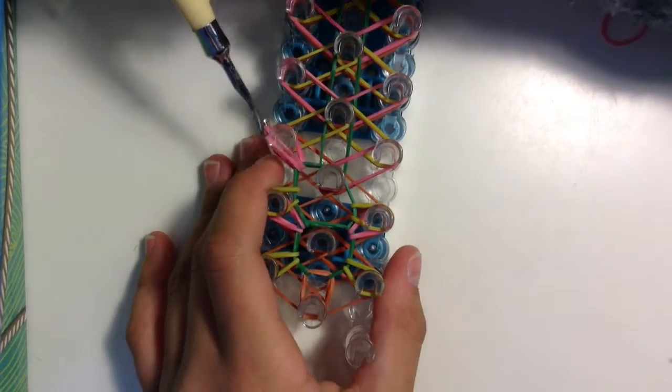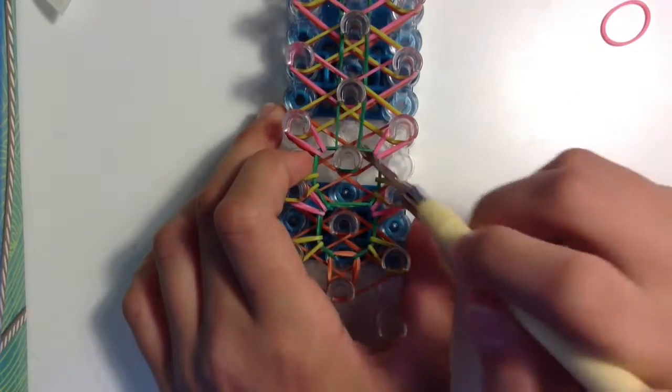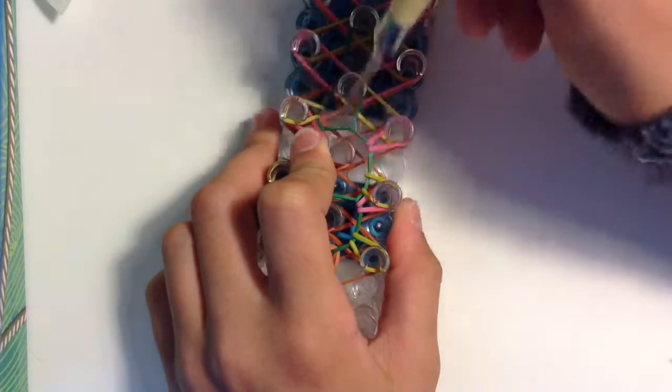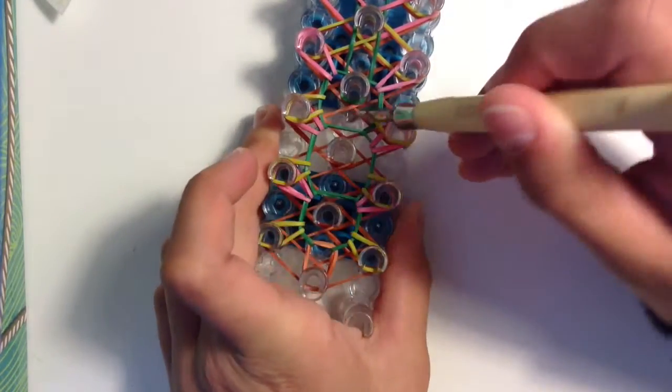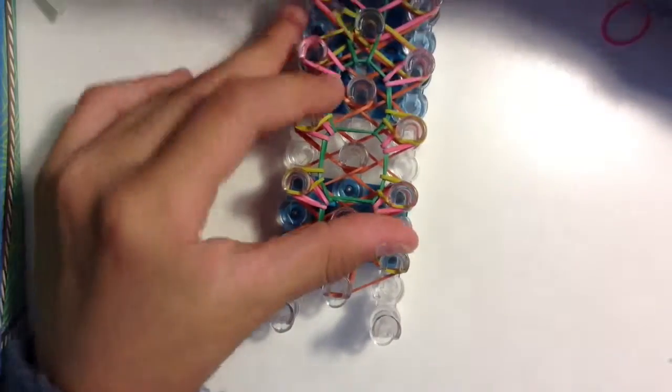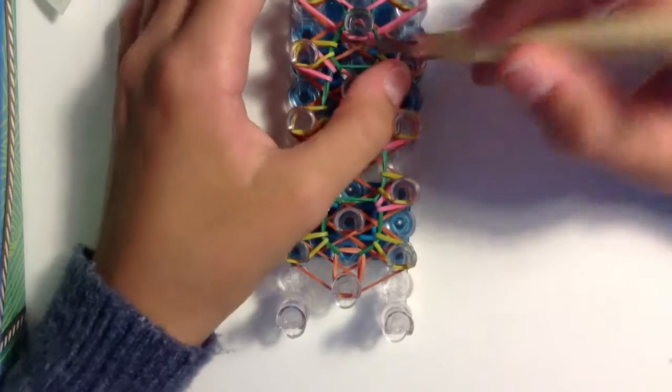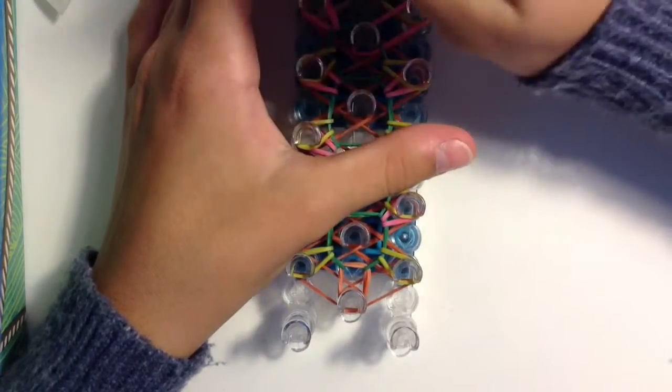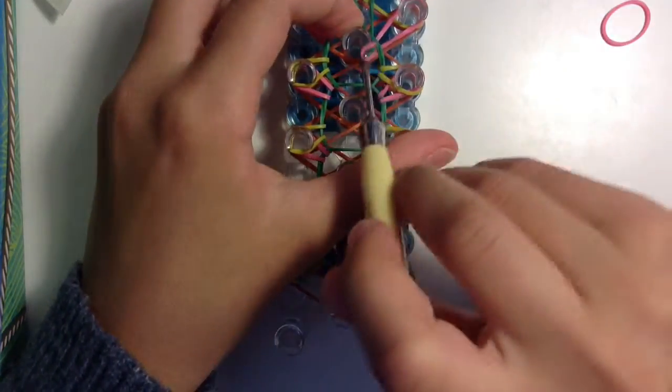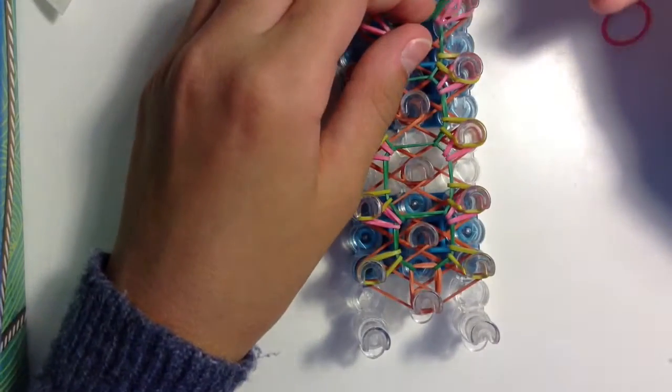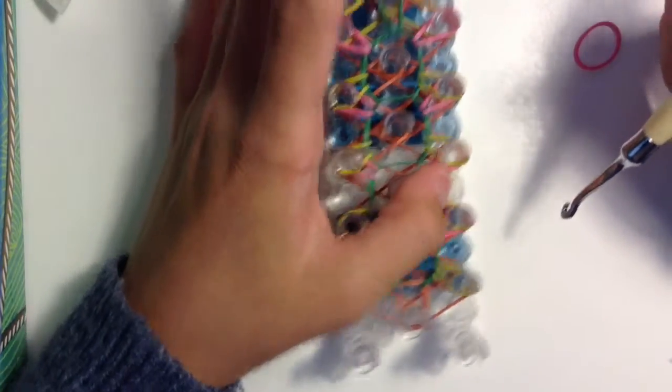We're just going to keep going same process. Grabbing that green band, playing forward. Grab that green band, pull it back to itself. Pull it back to itself, then go back into that pin, grab the first pink and pull it to itself. And then again on the other side.